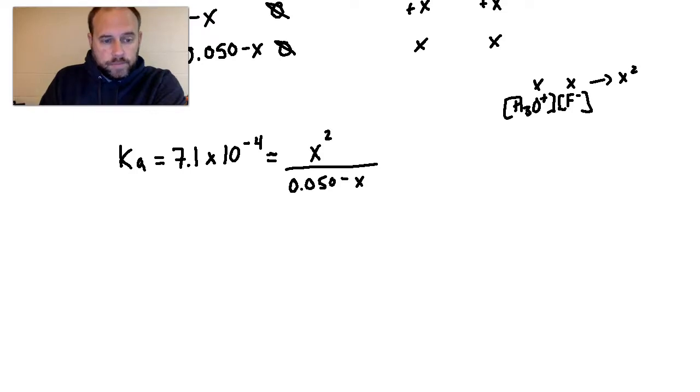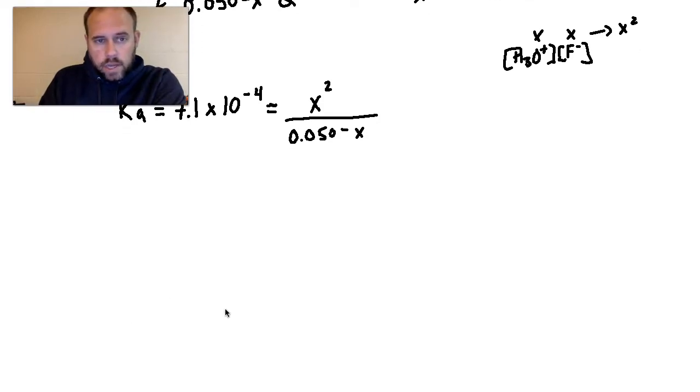All right. So if we take a look here, setting this up, the first thing I would do is I would take this chunk in the denominator and bring it up to the other side. So I would end up with 7.1 times 10 to the negative fourth, and I would multiply that times, and if you keep seeing me look off screen, I'm just checking my notes here, 0.050 minus x, and that is equal to x squared.